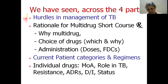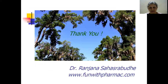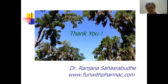That completes the details of all the drugs used in the RNTCP drug regimens. Across the four parts, we have seen the hurdles in management of tuberculosis, the rationale for multiple drug short-course treatment, which drugs are chosen and why, how they are administered, fixed-dose combination tablets, current patient categories, drug resistance scenarios and regimens, and in parts three and four the individual drugs in detail with their current status in tuberculosis. Thank you — do visit www.funwithpharmac.com for many more lectures.